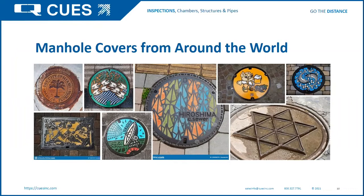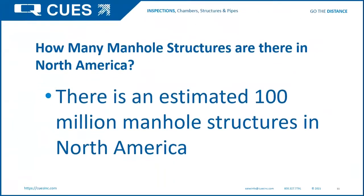How many manholes are there in the world used for access? Right now, they estimate in North America there are approximately 100 million manhole structures — kind of reminds you of a piece of Swiss cheese. And through further research, if there are 100 million accessible manhole structures in North America, they estimate approximately 1.5 billion manhole structures exist worldwide. Pretty amazing.